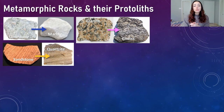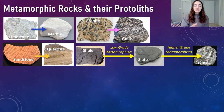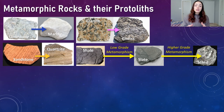Gneiss becomes banded because of compositional variation, though as we'll see later it can have a few other protoliths. Another example: schist and slate both have shale as their protolith. Slate is the low-grade metamorphic rock from shale, and schist is the high-grade metamorphic equivalent. When shale undergoes relatively low temperature and pressure metamorphism it becomes slate, and when it undergoes high temperature and pressure it becomes schist — or slate becomes schist after already being metamorphosed at low grade.